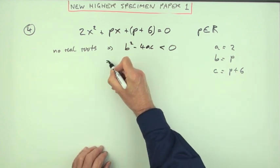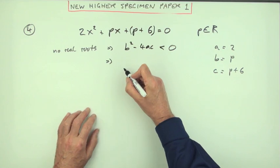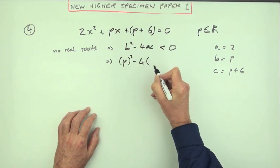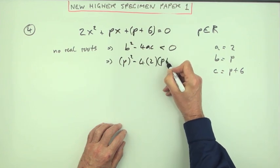But if you manage to do that, why weren't you able to identify it straight away here? b is p, I'll put in a placeholder, minus 4 times a which is 2, and then c is p + 6.